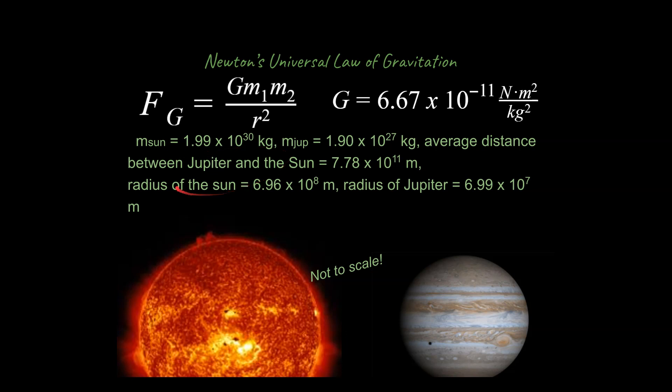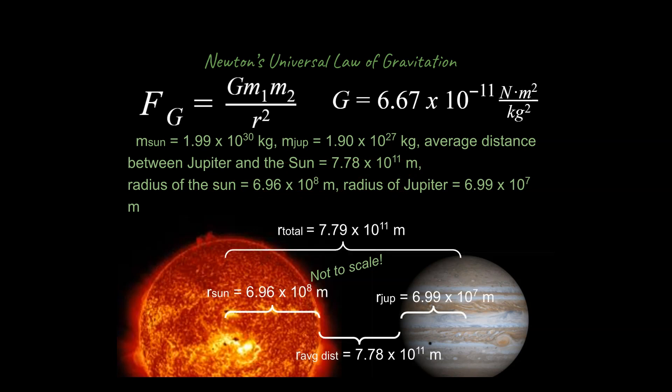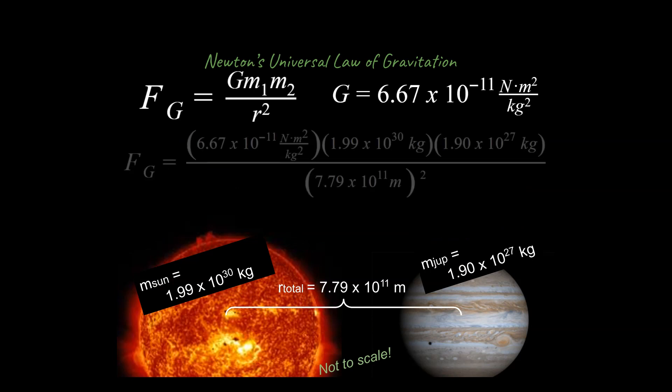But in this case, we can take this information, which I just randomly looked up, and we can start to apply it to this problem here. One thing we can do is to draw our diagram. So the radius of the Sun is here, the radius of Jupiter is here, the average distance between the surface of the Sun and Jupiter is here. That would give us our total value of the distance between the center of the Sun and the center of Jupiter here, because that's actually what we need. We cannot just take the distance between the surface of both the Sun and Jupiter. I will write down in our diagram here what the mass of the Sun is, what the mass of Jupiter is, and then we will just plug in our numbers.